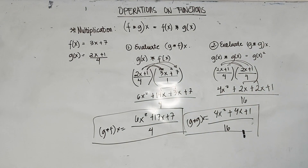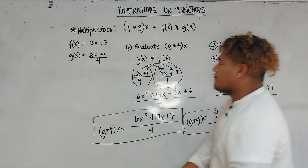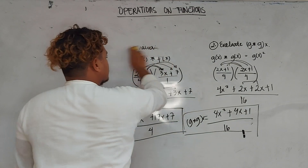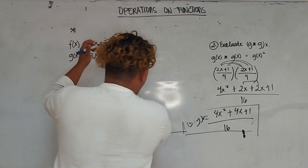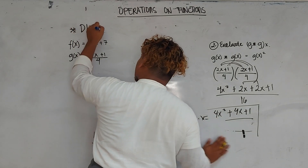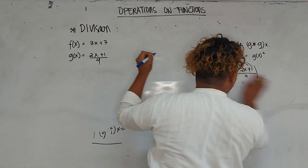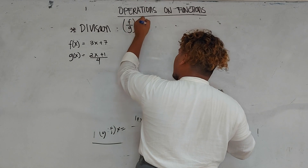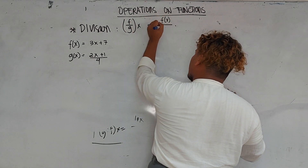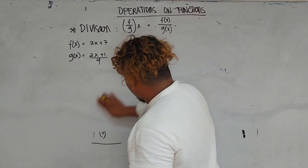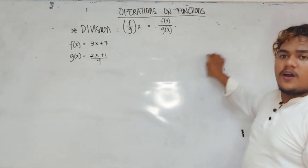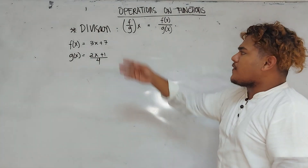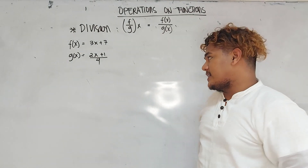Now, how about division? When we say division of functions with the same given, let's try division of functions. The concept goes like this: f over g of x is just equal to f of x over g of x. The concepts are very basic. So for division, if the given are f of x equals 3x plus 7, and g of x equals 2x plus 1 over 4...